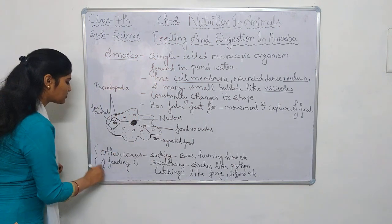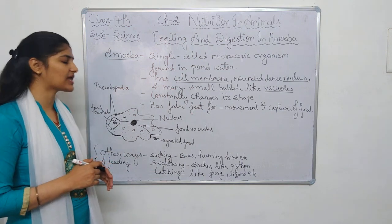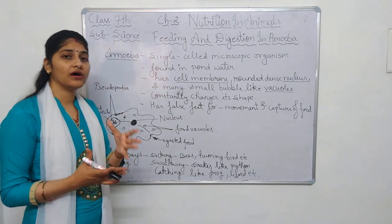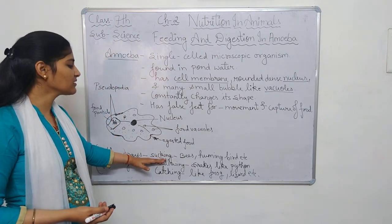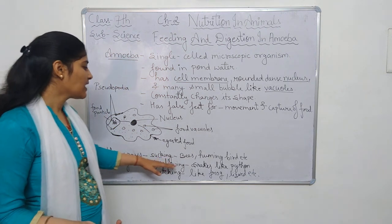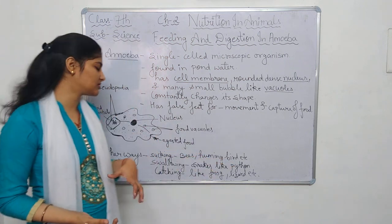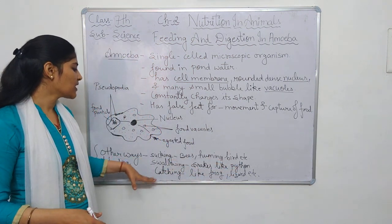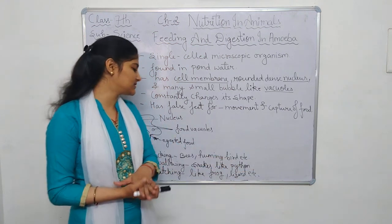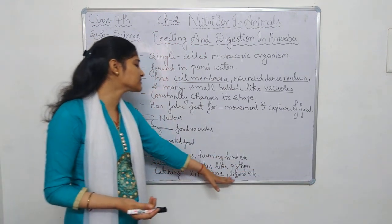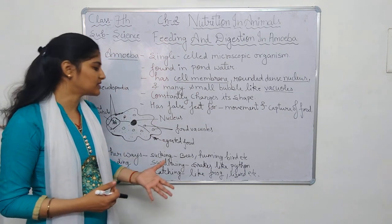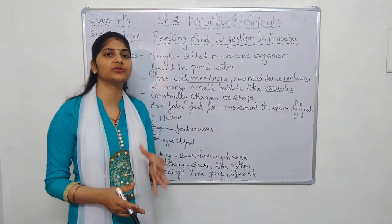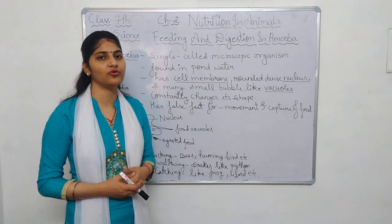There are other ways of feeding in different animals. We have already learned about chewing, which happens in human beings and ruminants. Other than that, sucking is also a method of feeding — bees and hummingbirds take their food by sucking. Swallowing is another method — some snakes like python swallow their food. Catching is also a method — frogs, lizards, and insects catch their prey and feed on them. This is all about our chapter, nutrition in animals. I hope you all understood it. In case you have any question, just let me know. Thank you.